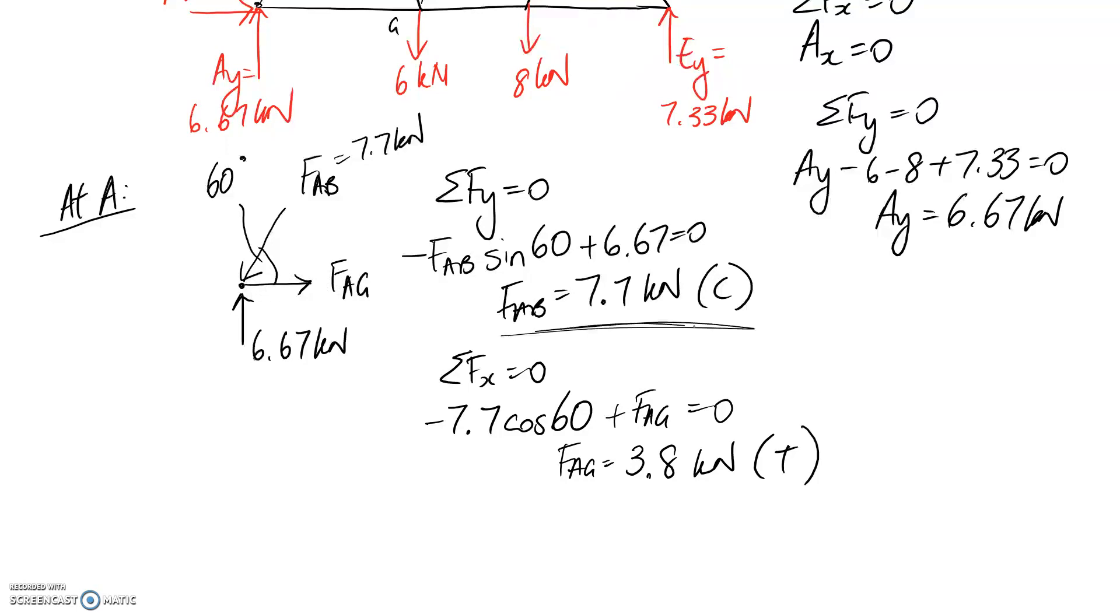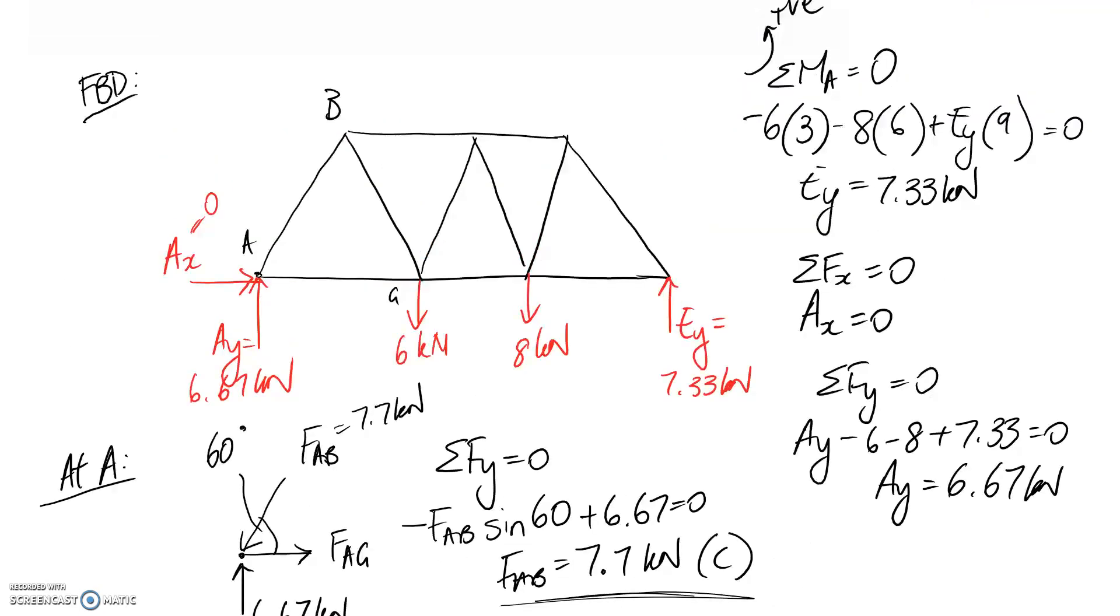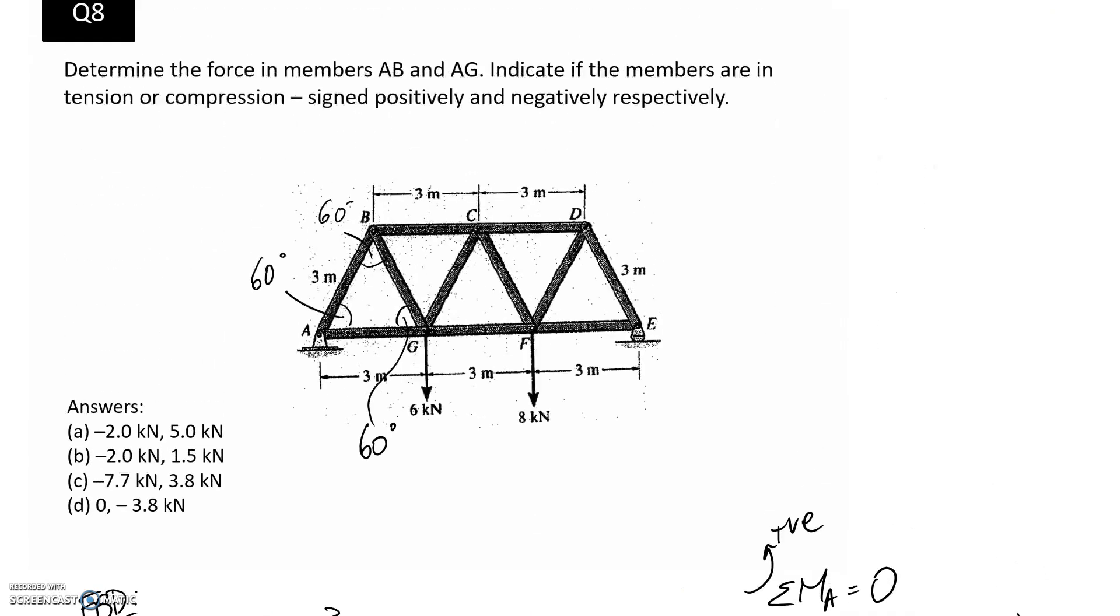So these are the two answers that we need to look for. If we go up here, these first ones are the force in AB and these next ones are the force in AG. We decided that AB had a force of 7.7 kilonewtons and the negative means it's in compression, which is what we had. And we also worked out that AG had 3.8 kilonewtons and it's positive, which would suggest it's tension, which is again what we had. So that would be the answer to this question. That's all there is.